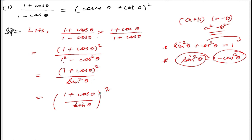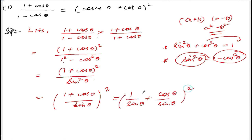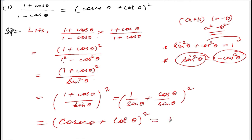Both the top and bottom are squared. So, write down 1 divided by sin theta plus cos theta divided by sin theta, whole square. I am writing 1 by sin and cos by sin separately. Now, 1 by sin theta is cosec theta, and cos theta by sin theta is cot theta, whole square. Which equals the right hand side. Hence proved.